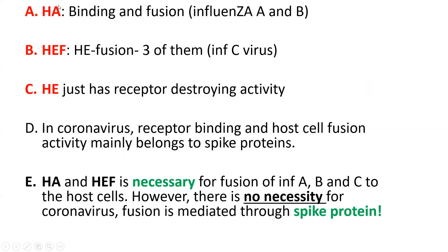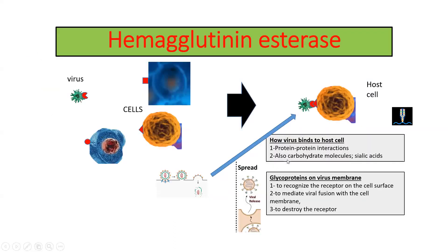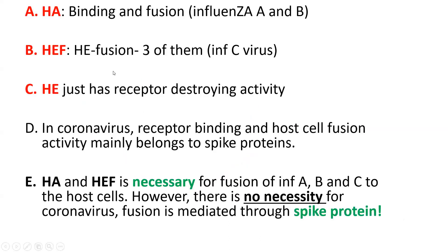In different viruses there are different glycoproteins. As I explained, the three main functions of glycoproteins are binding, fusion, and receptor destruction. The HA glycoprotein (hemagglutinin) is located in influenza A and B and has two functions — binding and fusion — but not receptor destroying; that is done by a separate enzyme. The hemagglutinin esterase fusion (HEF) protein is located in influenza C virus and performs all three functions. The hemagglutinin esterase (HE), which is our topic, is located in coronavirus and has only receptor-destroying activity.